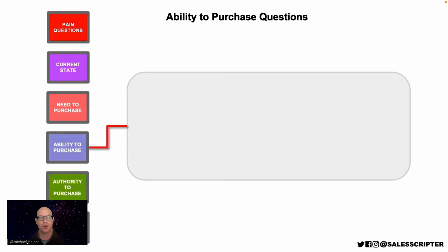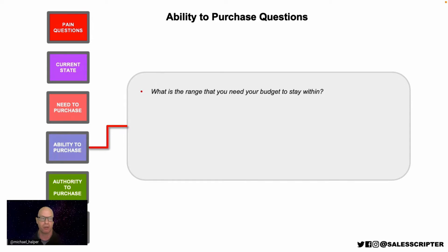Questions to assess ability to purchase include: 'What is the range that you need your budget to stay within?' This is a nicer way to ask whether they have money to spend rather than bluntly asking 'How much money do you have?' — which can make the prospect guarded. By softening the question with the word 'range,' you make the prospect more comfortable sharing financial information.